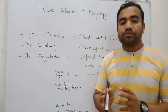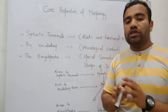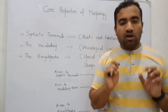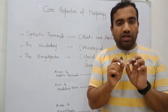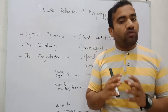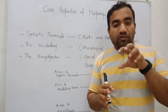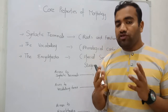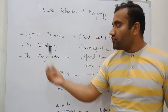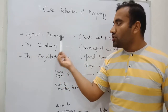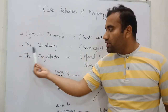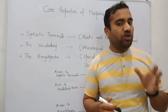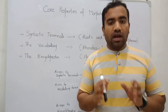The topic is the core properties of morphology. There are three core properties of morphology. When we want to generate a word — when a word is being generated in our minds — there are three processes involved. The first is syntactic terminals, the second is vocabulary items, and the third is encyclopedic information. I have already discussed the Y-model in more detail in our previous video.